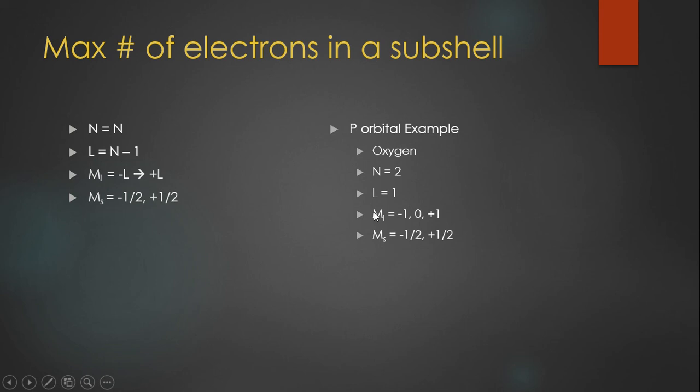So let's just start with ML equals negative one. Negative one can then branch off to negative one-half, positive one-half. And that's all the different combinations we can get from that particular ML value. And then we repeat it for zero and positive one. So in total, it's going to be six different combinations, meaning six different electrons can be put into a p orbital.